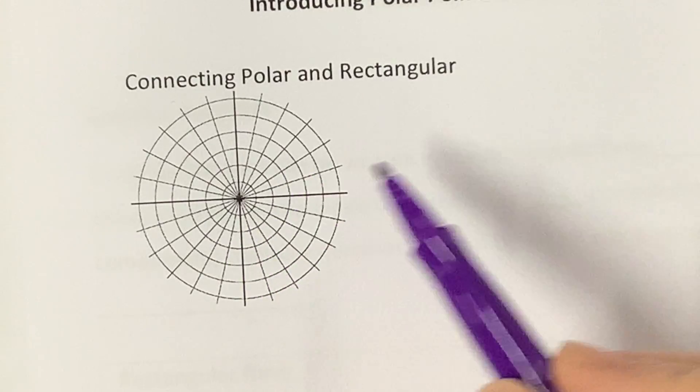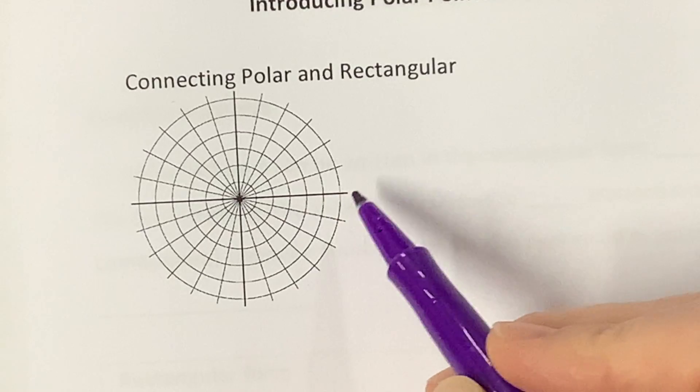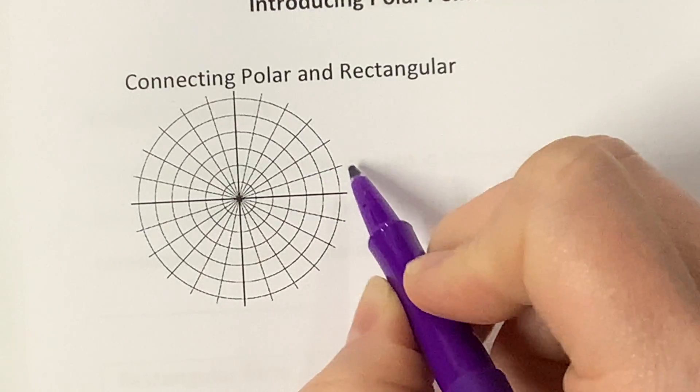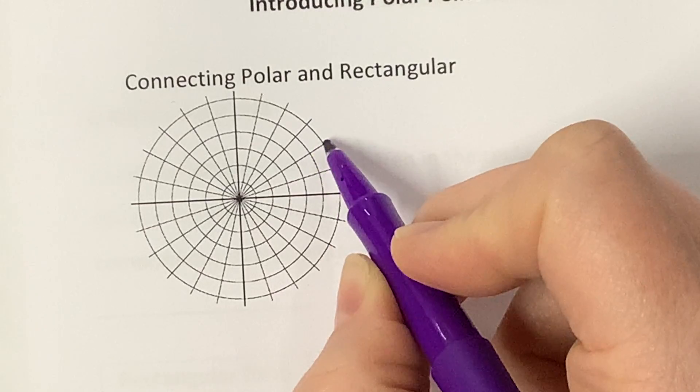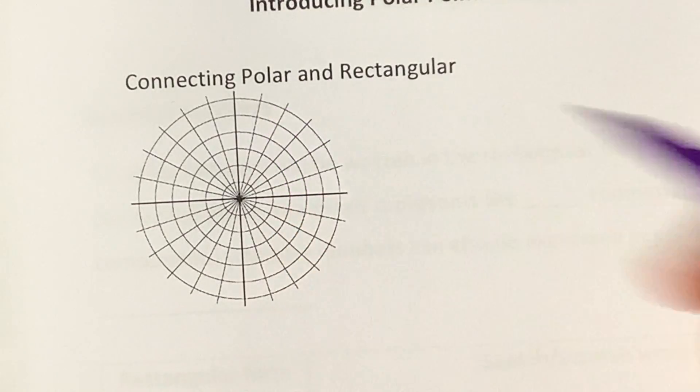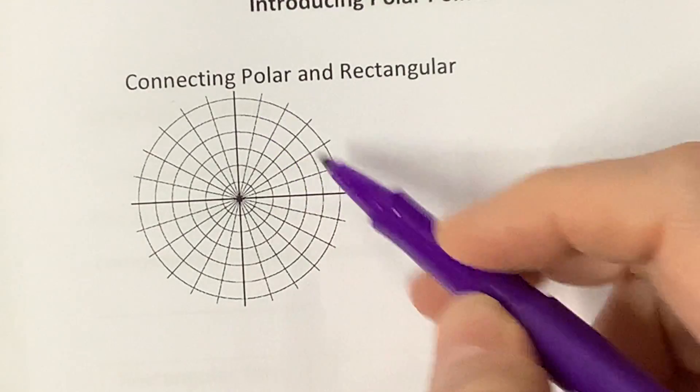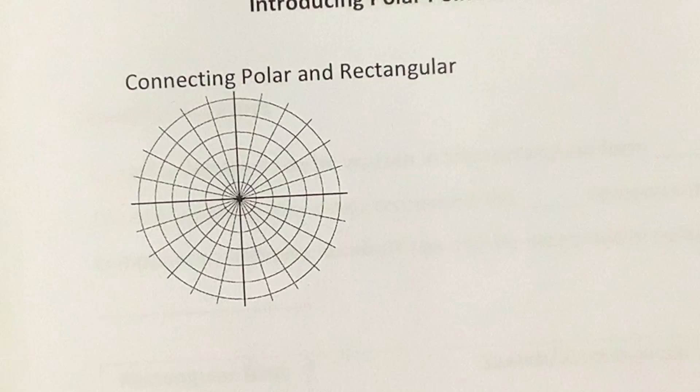And then we have the different angles. They tend to split this up into like the π over 12 family. So like here would be 1π over 12, 2π over 12 is π over 6. So here's π over 6, here's π over 4, here's π over 3. And then we have, this would be 5π over 12. We don't use the π over 12 and 5π over 12 too often. We could. We know how to use it now that we've done the sum and difference identities. But we don't use it too much.